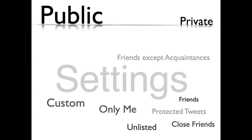When you choose to protect your tweets, only your approved Twitter followers can view them. They are not able to retweet them, and your protected tweets do not appear in any search. In addition to this, you are not able to share a link to your tweets with anyone other than your approved followers.